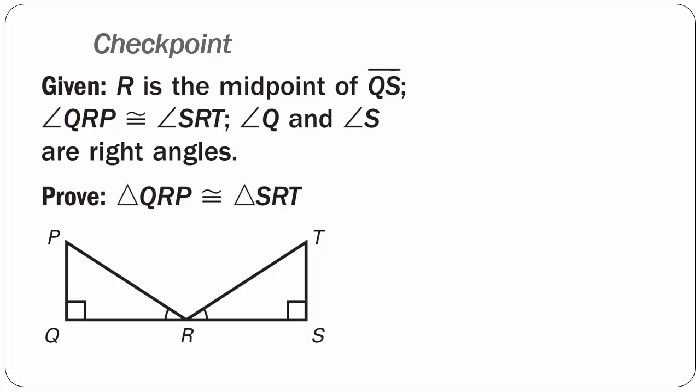Checkpoint problem number one is yours. You are given that R is the midpoint of line segment QS — remember what the midpoint does to a line. We also know that angle QRP is congruent to angle SRT, and that angle Q and angle S are right angles. Prove that triangle QRP is congruent to triangle SRT. For this lesson, we will not be doing Example 3 or checkpoint problem number two. That's it from me — I will see you all soon. Bye-bye.